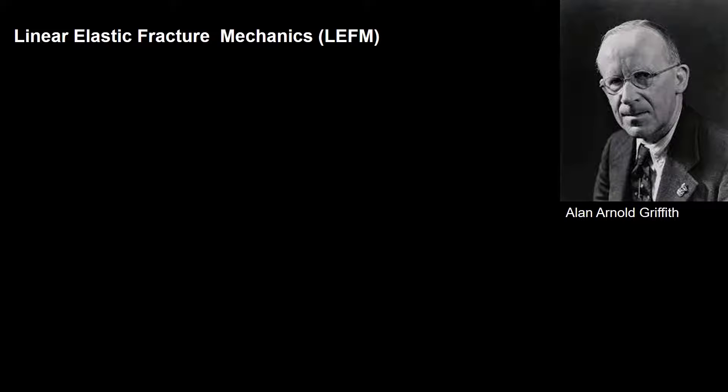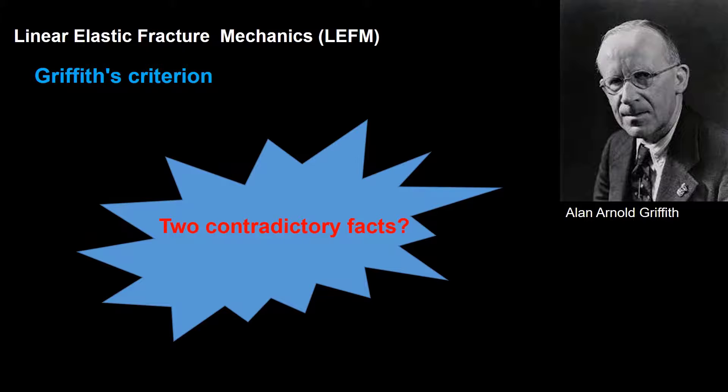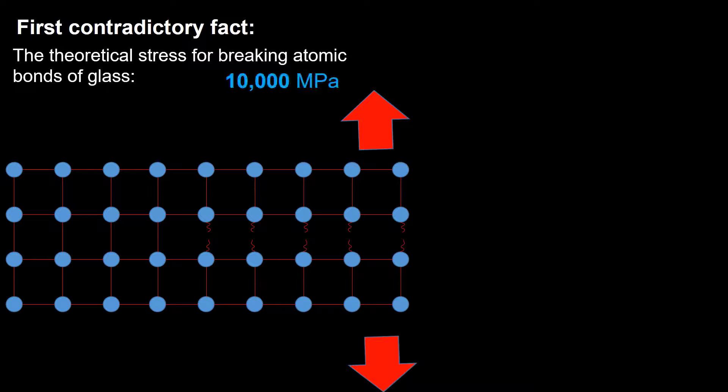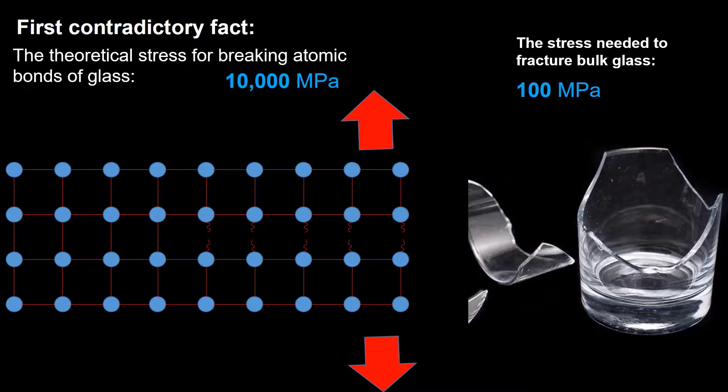Fracture mechanics was developed during World War I by English aeronautical engineer Alan Arnold Griffith. Let's investigate Griffith's model as the first criterion for LEFM. Motivations for developing Griffith's model were two contradictory facts that were observed in strength of glass. The first contradictory fact is amazing. The theoretical stress needed for breaking atomic bonds of glass is approximately 10,000 MPa. But we know that glass can broke easily in real world. The stress needed to fracture bulk glass is around 100 MPa. The real fracture stress is 100-fold smaller. Do you believe it?